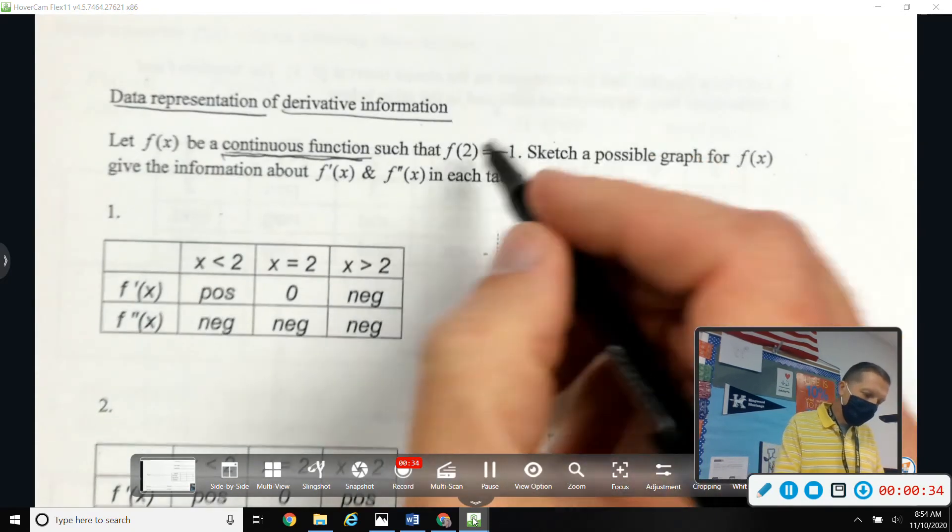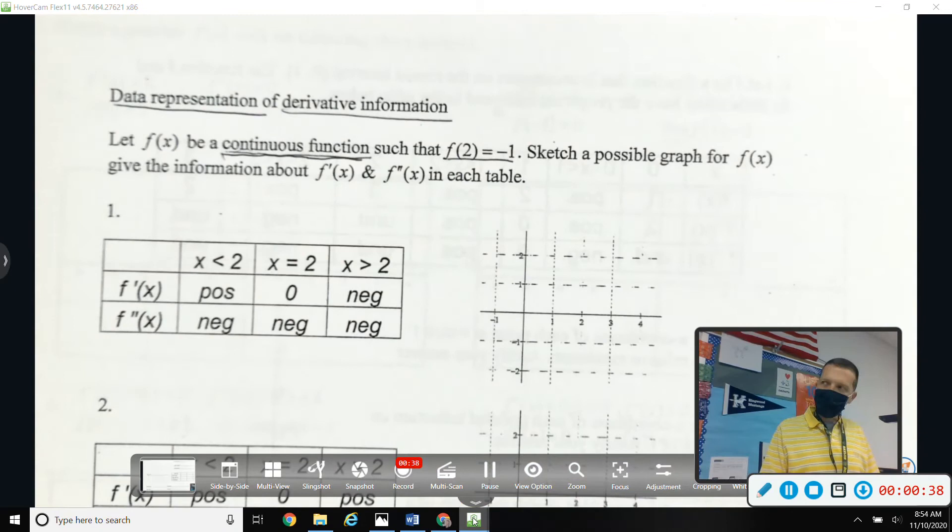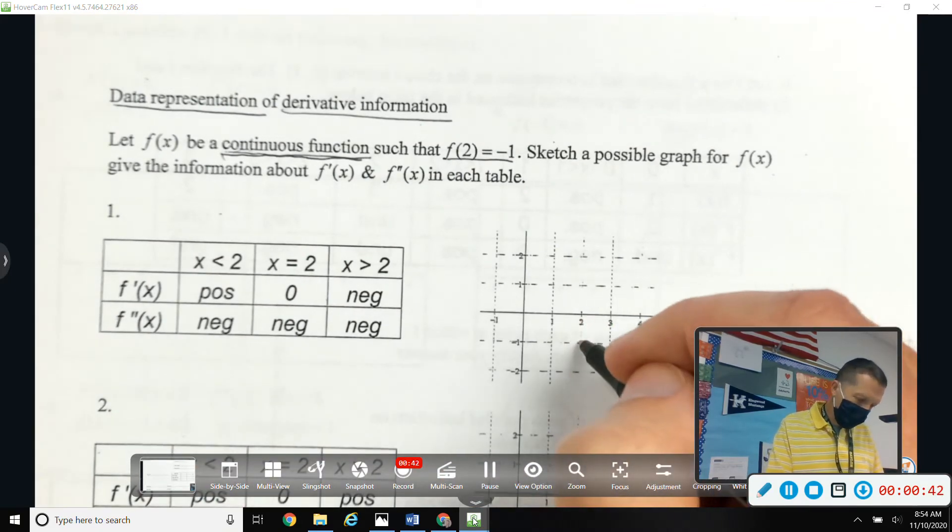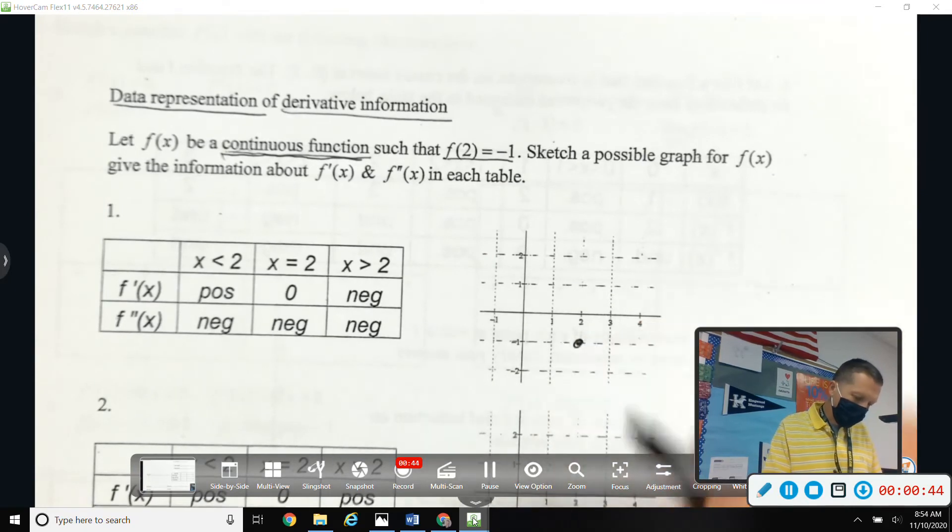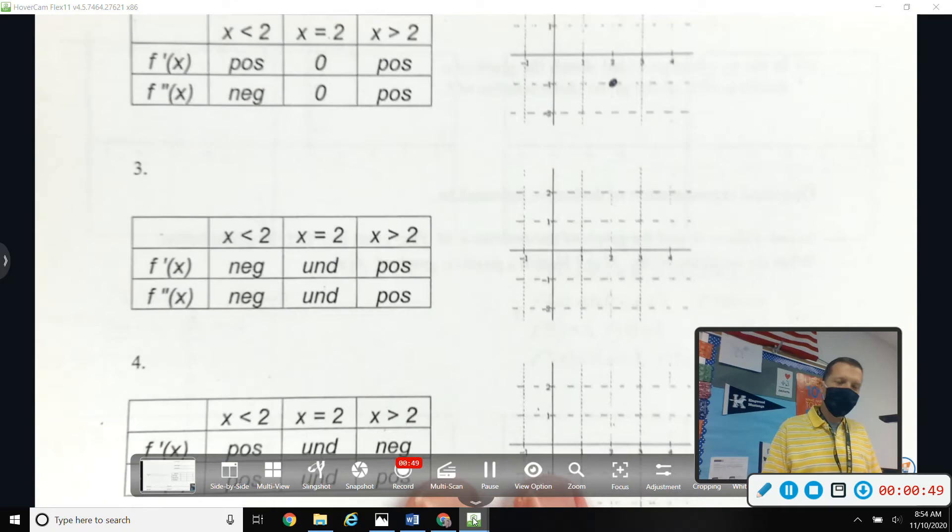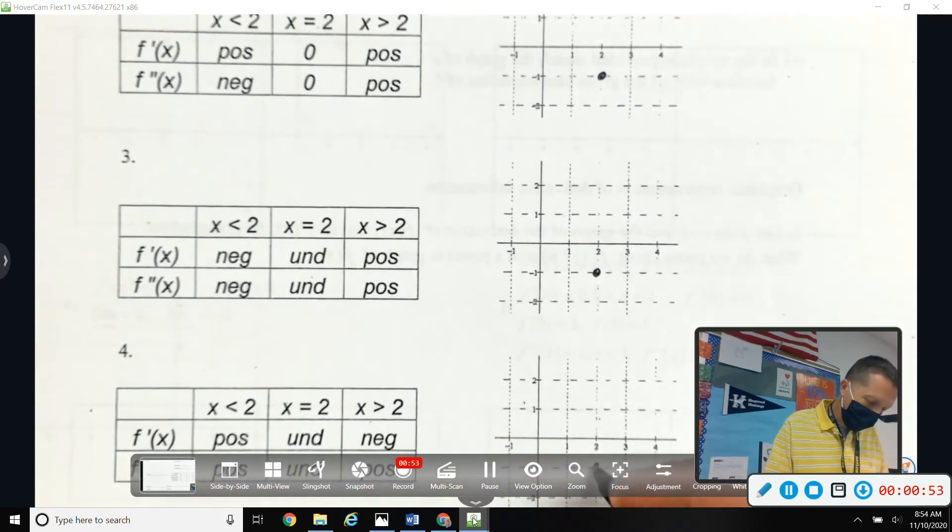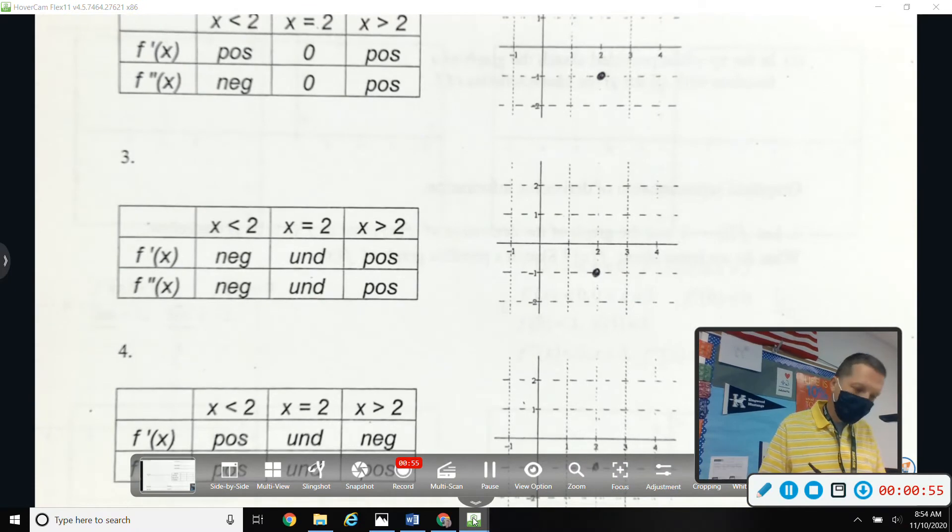The problem says f of 2 equals negative 1. Sketch a possible graph for f of x given what we know. Well, f of 2 is negative 1 on all of these, so before we forget, it might be a good idea to just put that point on every graph. So all the way down the page, the point 2, negative 1 is on the graph.